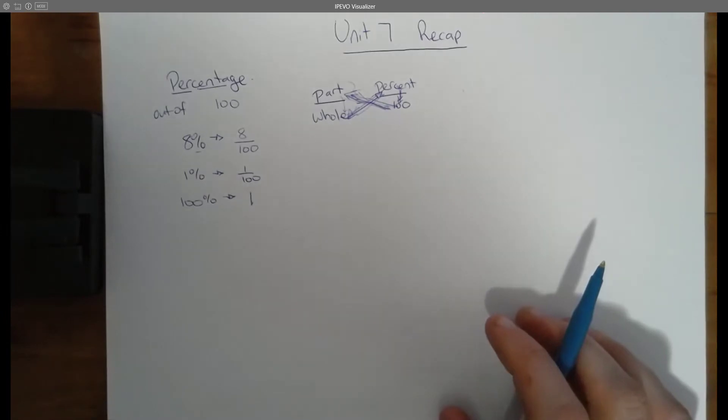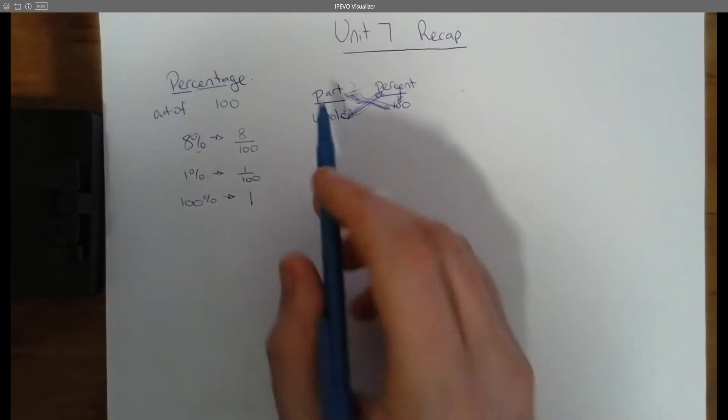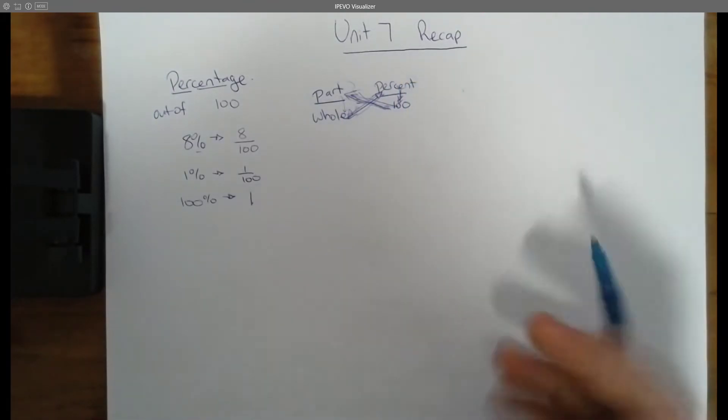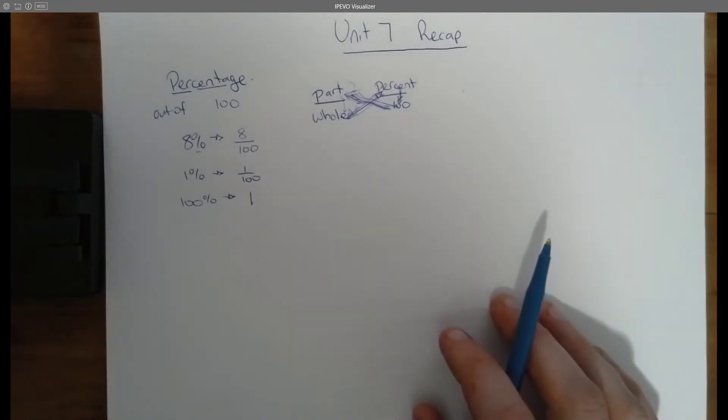But the key here is that whether we have the part of something, the whole of something or the percent of something, if we have two bits of that information, we can figure out the third. And we spent the majority of this unit trying to do that and trying to solidify that.